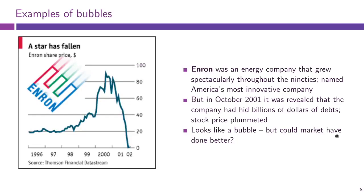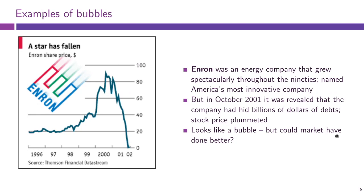Let us look at a few examples of bubbles. No discussion is complete without mentioning Enron, which is maybe a synonym for a bubble for a lot of people. It was an energy company with huge growth in the 1990s and then a drastic drop in the 2000s, around the same time as the dot-com bubble. It's not entirely clear if it's connected to the dot-com bubble since it was an energy company, not a tech company, but it might be.